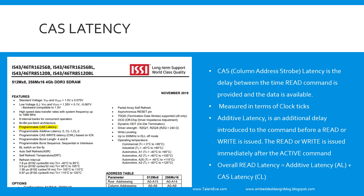Another parameter a DDR user must know is CAS latency — column address strobe latency. Before going into that, we will briefly cover the DDR architecture. As discussed in the previous tutorial, we talked about the memory organization where you have row address and column address.